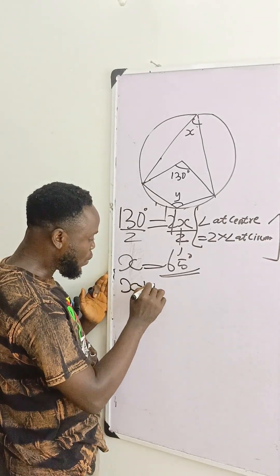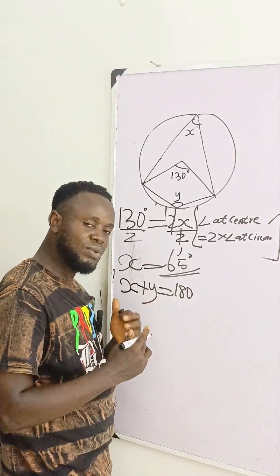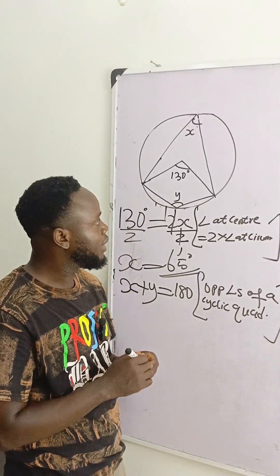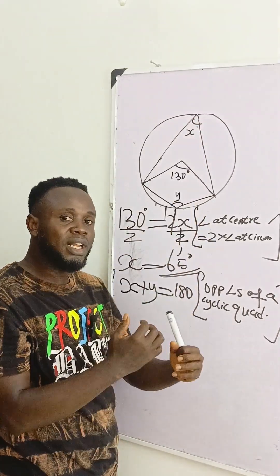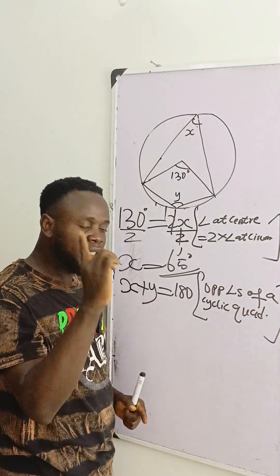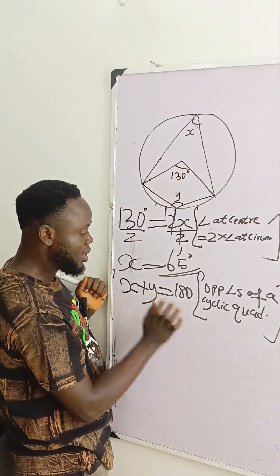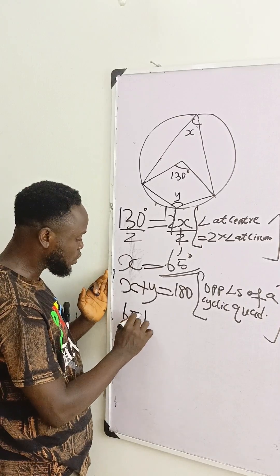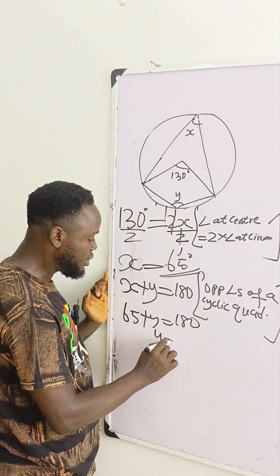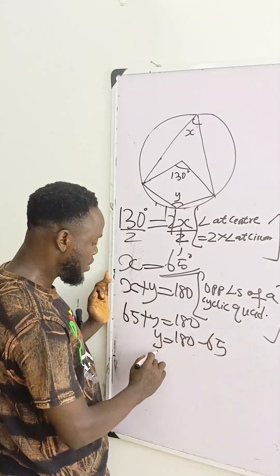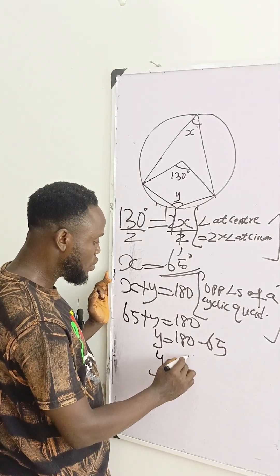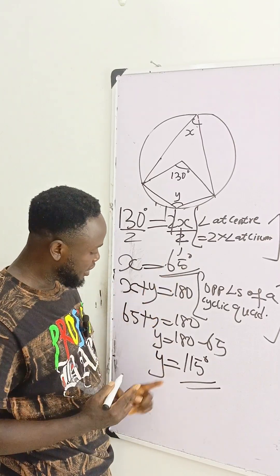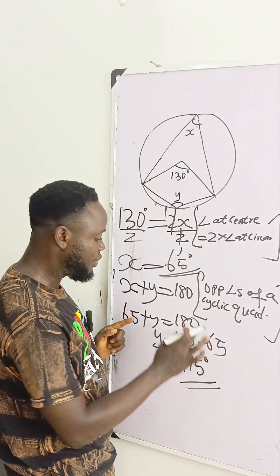So I'll write x plus y is equal to 180. Why? Because opposite angles of a cyclic quadrilateral are supplementary — meaning they add up to 180 degrees. We already have x as 65, so 65 plus y equals 180. Therefore y is 180 minus 65, which gives us y equal to 115 degrees. So our final answers are x equals 65 degrees and y equals 115 degrees.